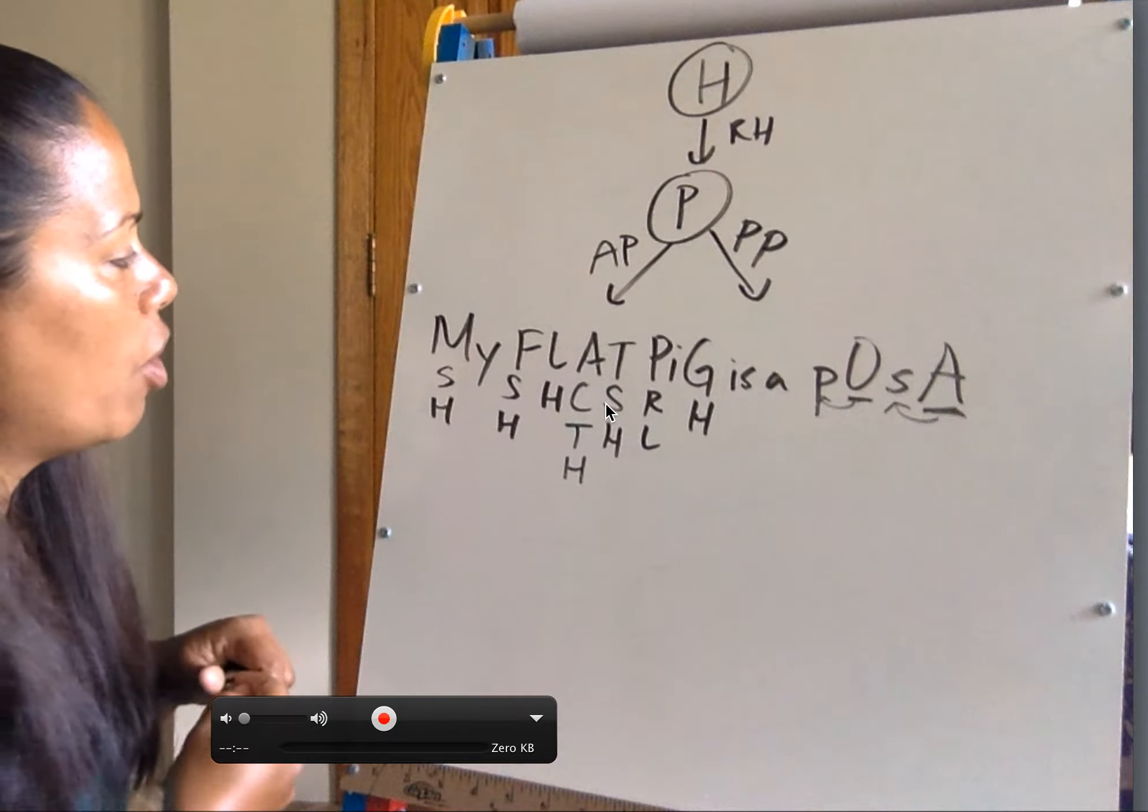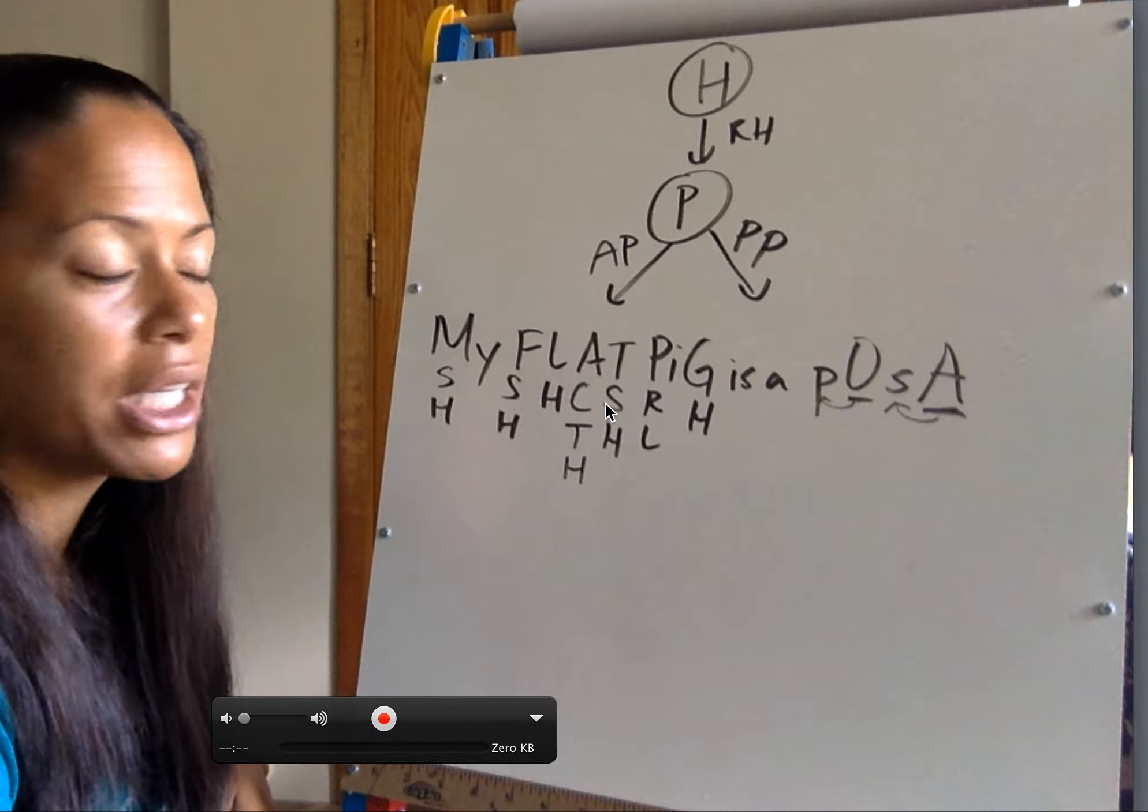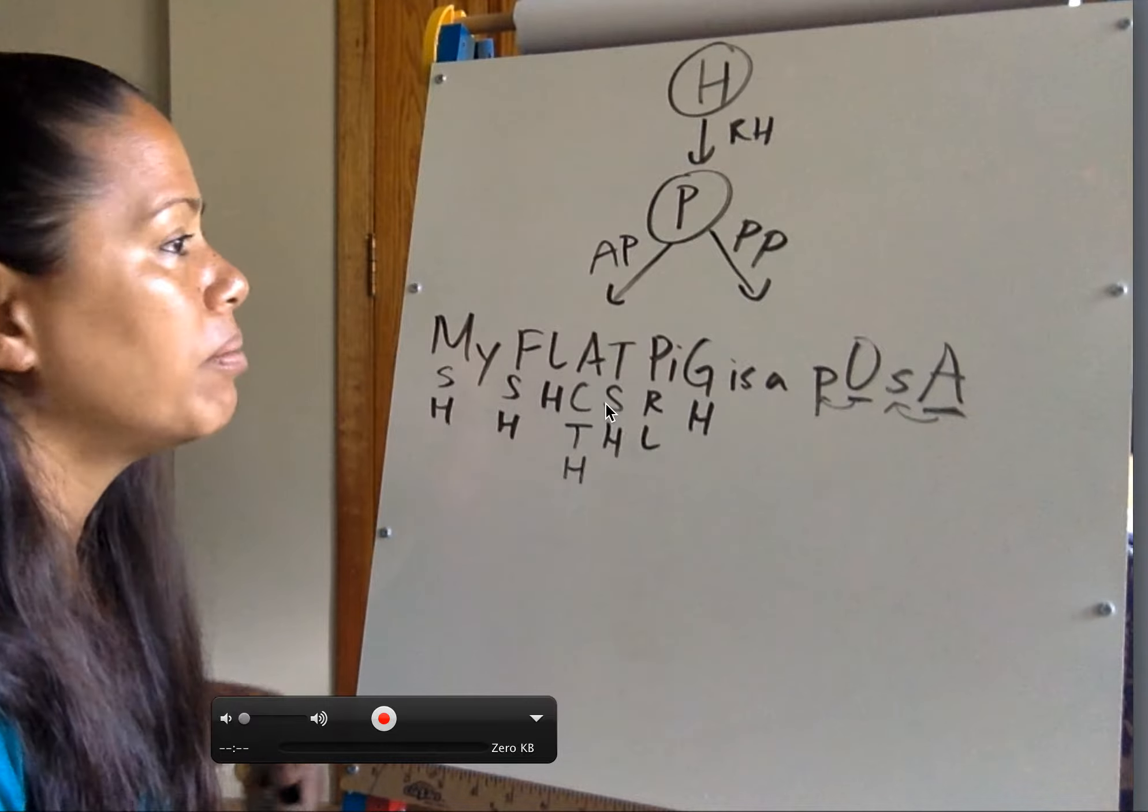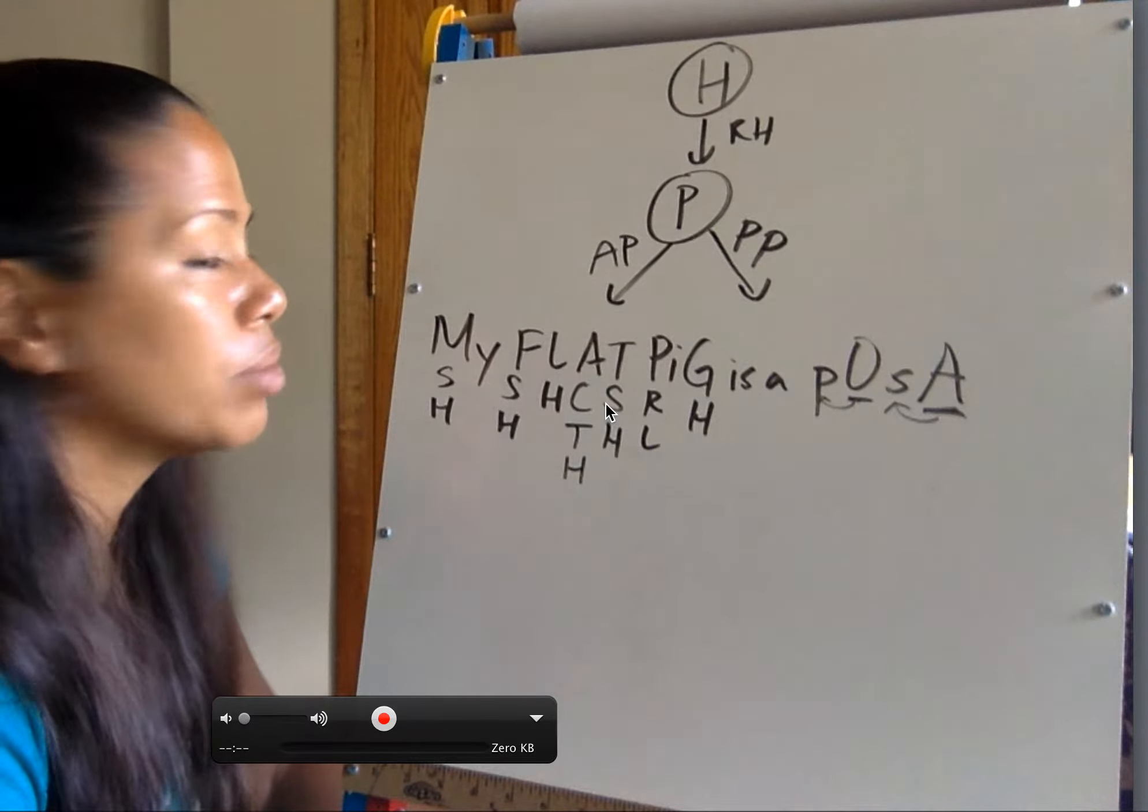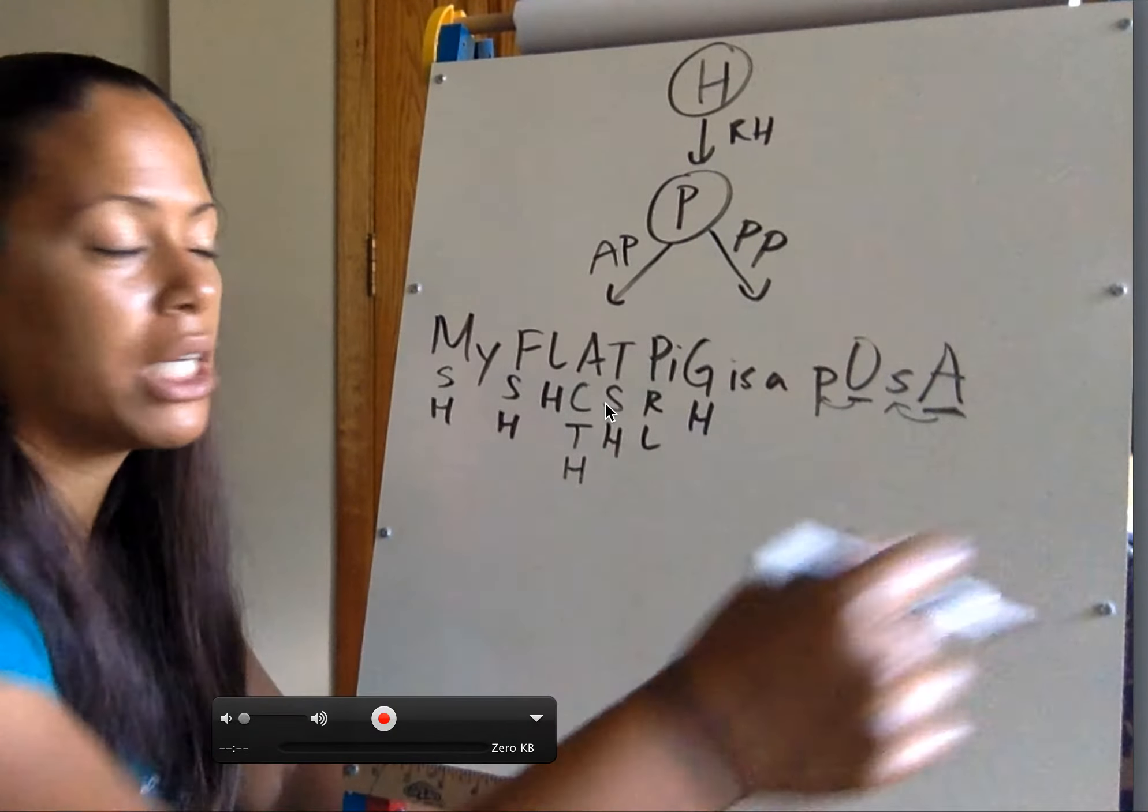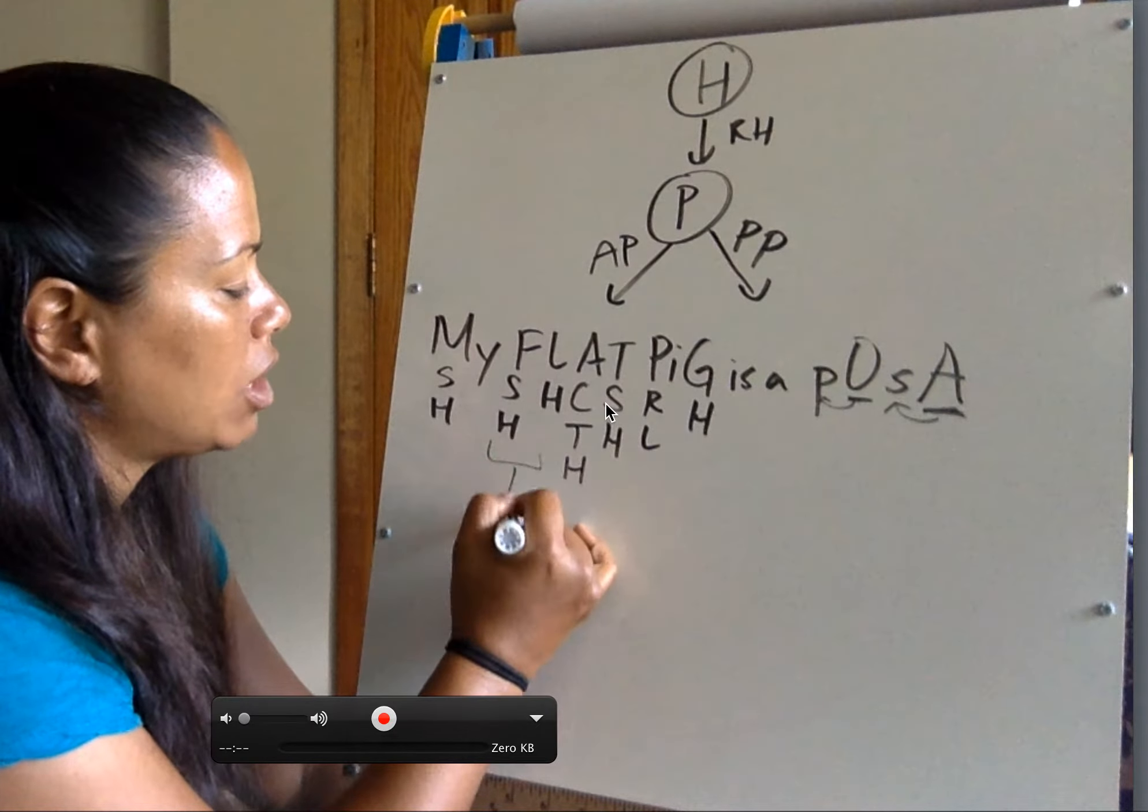So let's review. What does MSH stand for? MSH is melanocyte stimulating hormone. It acts on melanocytes, which are cells that hold melanin, to release melanin, and melanin is the brown pigment in the skin.